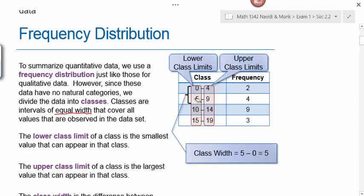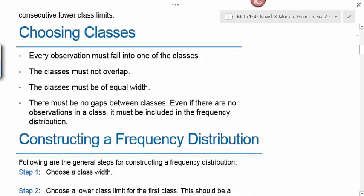The class limits must be different—you can't have an interval from zero to five and then from five to ten, because a data value of exactly five could fall in either class. So there will be a small gap between class widths. Every observation must fall into one of the classes; classes must not overlap and must be of equal width. Even if there are no observations in a class, you record a frequency of zero.